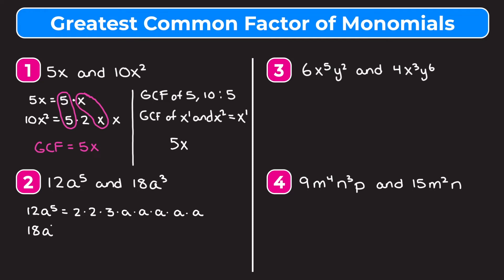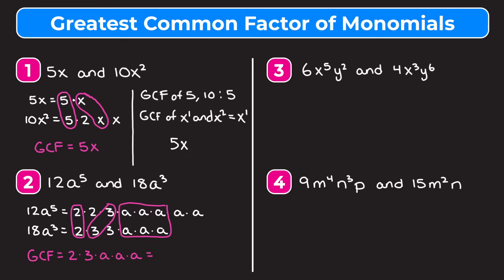For 18a to the third: 18 is 9 times 2, and 9 is 3 times 3, so we have 2 times 3 times 3. Then a to the third is three a's multiplied together. Now we circle what they have in common: one 2, one 3, and three a's. So the greatest common factor is 2 times 3 times a times a times a, which simplifies to 6a to the third.